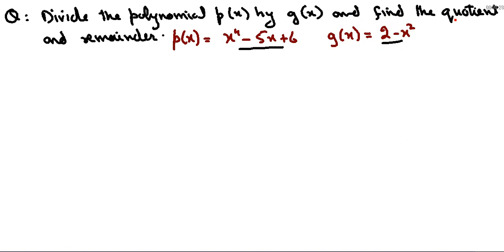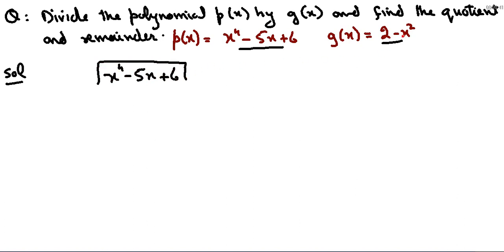हमें quotient और remainder देखना है। हमारे पास है x⁴ − 5x + 6, इसको हम divide करते हैं 2 − x² से। हम decreasing order में degree लिखते हैं, तो g(x) बनेगा −x² + 2। इधर भी decreasing order में degrees लिखी हैं: 4, 1, और 0। यह standard form है।